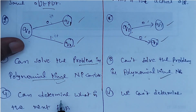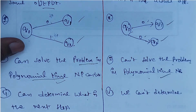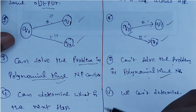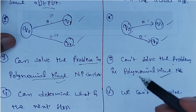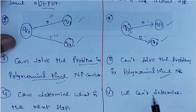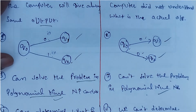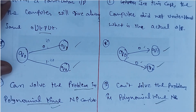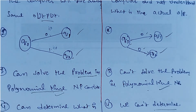The last point is about determining the next step. In a deterministic algorithm, we can determine what the next step is. In a non-deterministic algorithm, we cannot determine what the next step is. This covers the differences between deterministic and non-deterministic algorithms.